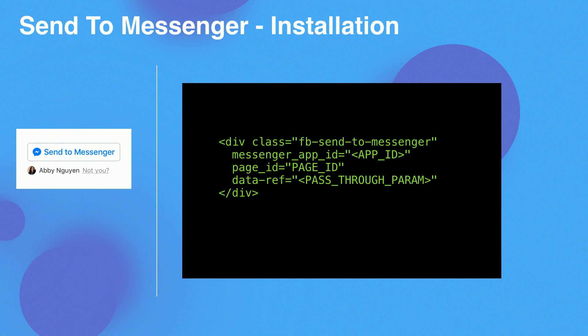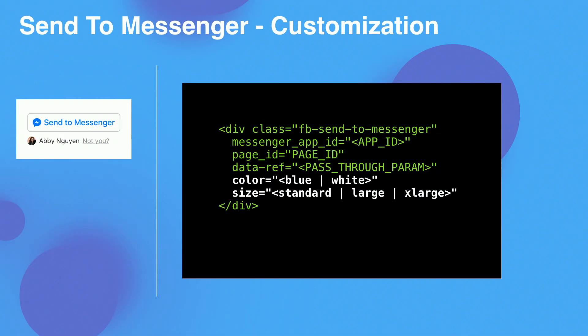Installation is pretty easy for the Send to Messenger plugin. You just need to put this code on your website and specify the plugin you are using. You can also pass in an optional ref param to add any additional data you want. When users click on Send to Messenger and opt in, you will receive those ref params and can start messaging the users. Same as the Message Us plugin, you can also customize the color and size to best fit your website. We are adding more capabilities to customize this experience to make sure it fits your website's look and feel.